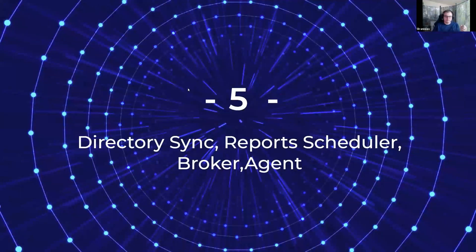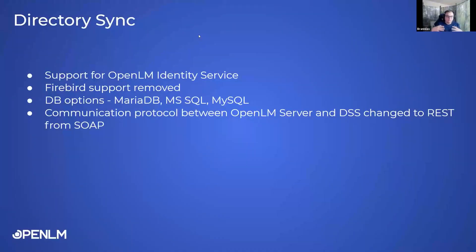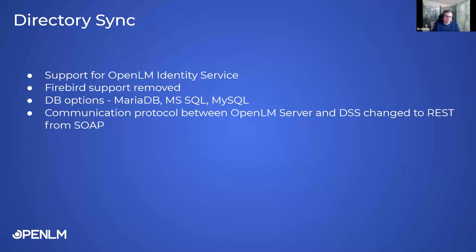Now let's talk about the addons, extensions, and directory sync as a standalone product. With the new directory sync in version 21.5, there is support for OpenLM identity service — you can connect these two on the backend, which increases security. Support for the Firebird database for directory sync has been removed. Customers can now choose the bundle with MariaDB or go with Microsoft SQL or MySQL. The communication protocol between OpenLM server and directory synchronization has been changed from SOAP to REST API.